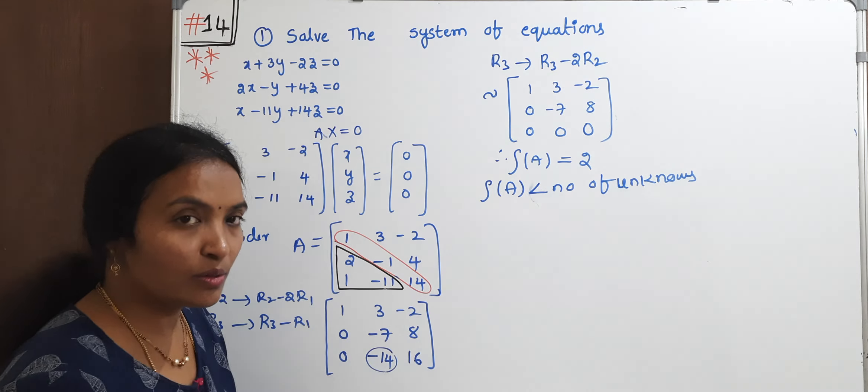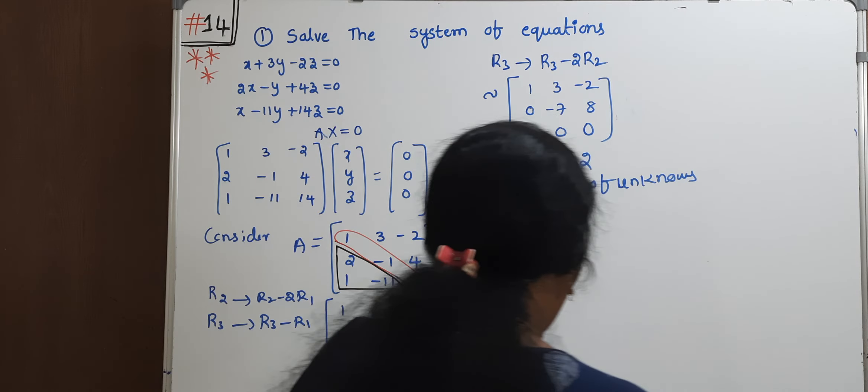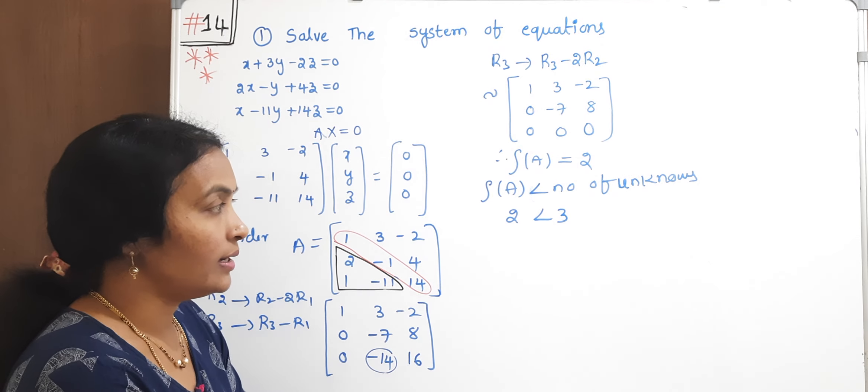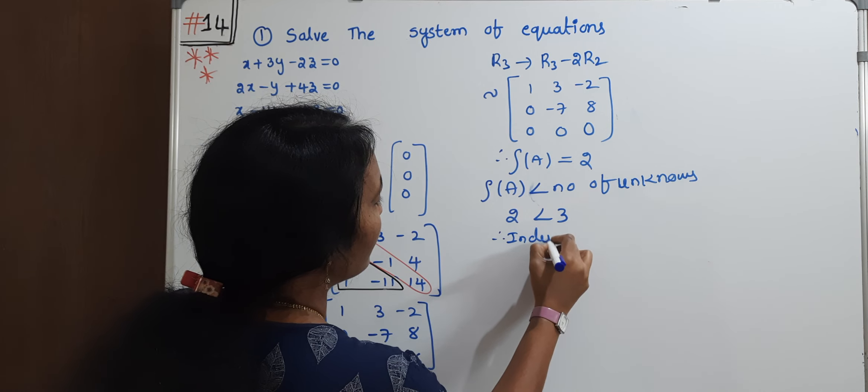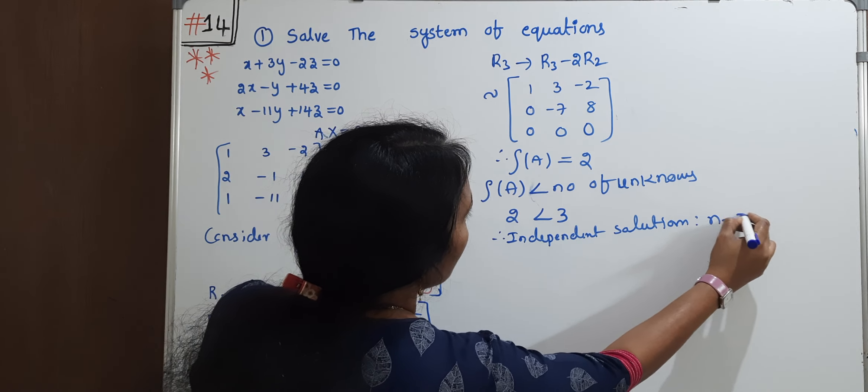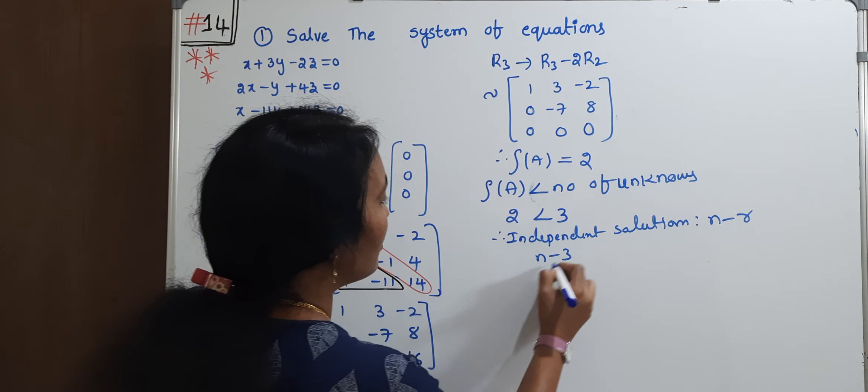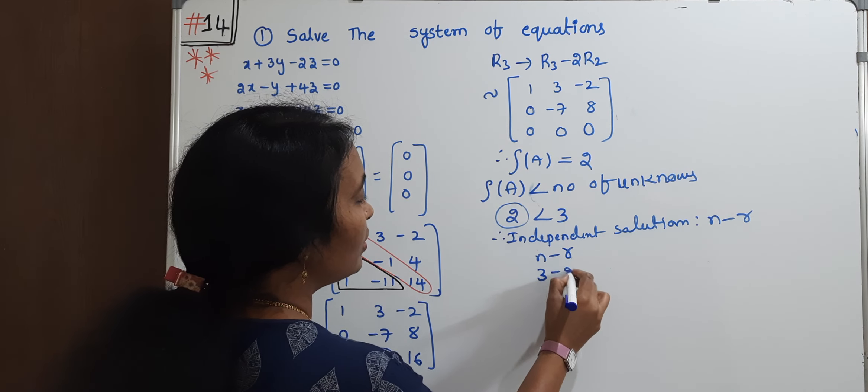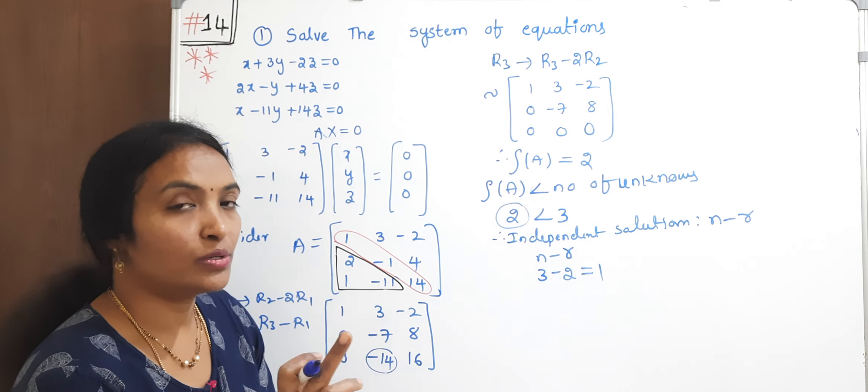How to get the independent solution? Number of independent solutions, n is nothing but number of unknowns. n minus r. n is 3, r is 2. Independent solution is 1.